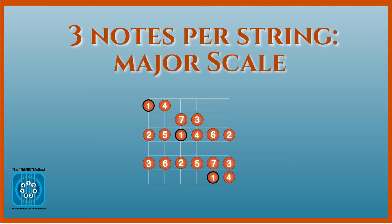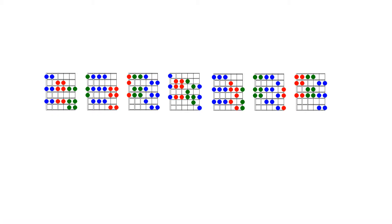In this lesson, we will talk about visualizing three notes per string major scale patterns using the NANDI method of fourths. Since there are seven notes in the major scale, we can have seven patterns, each starting from one of the seven degrees of the major scale. There is a total of 18 notes in each pattern, given that there are three notes on each of the six guitar strings.